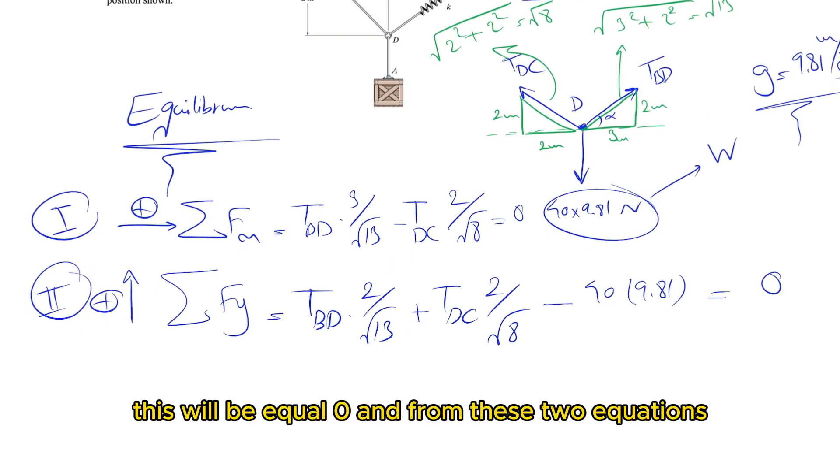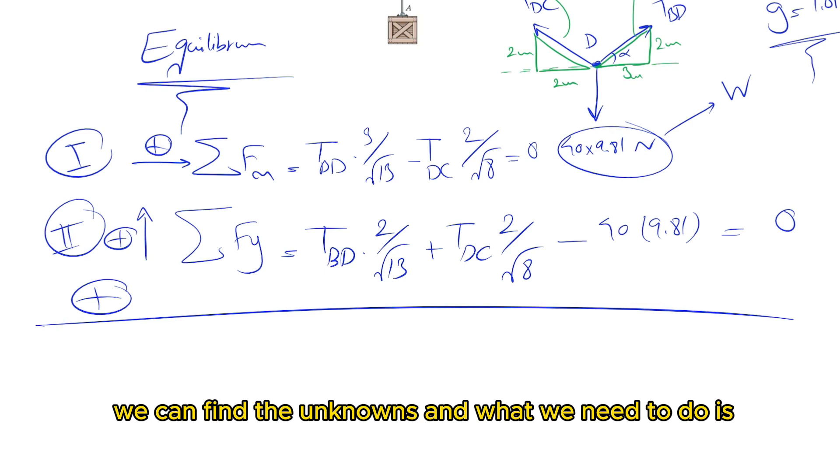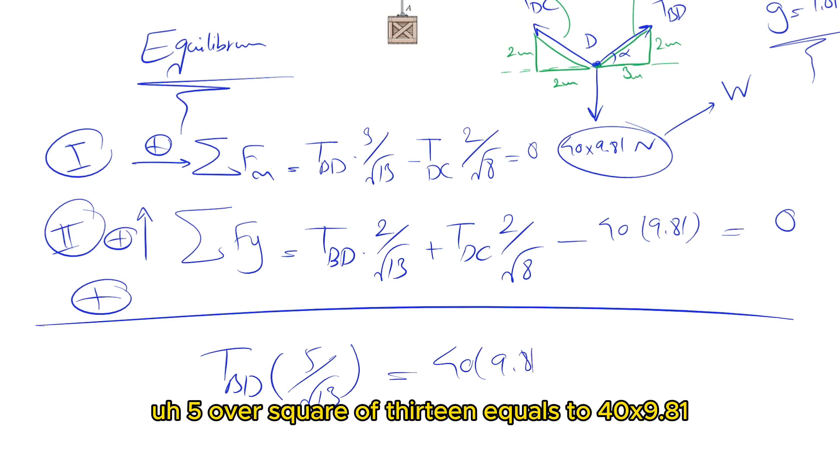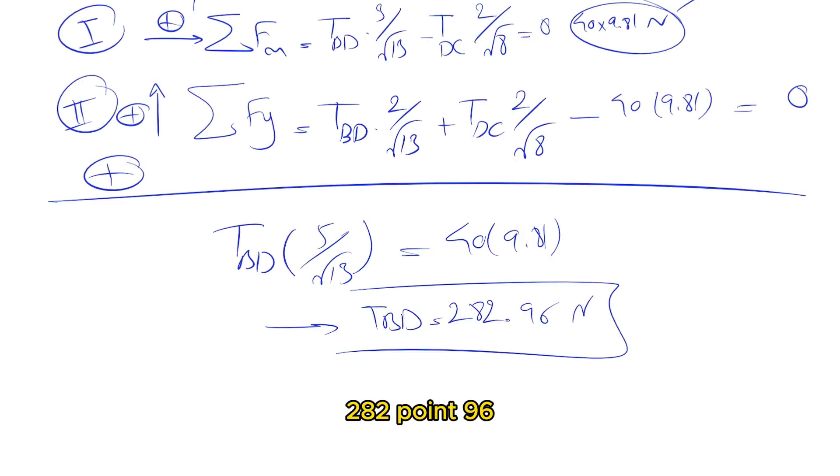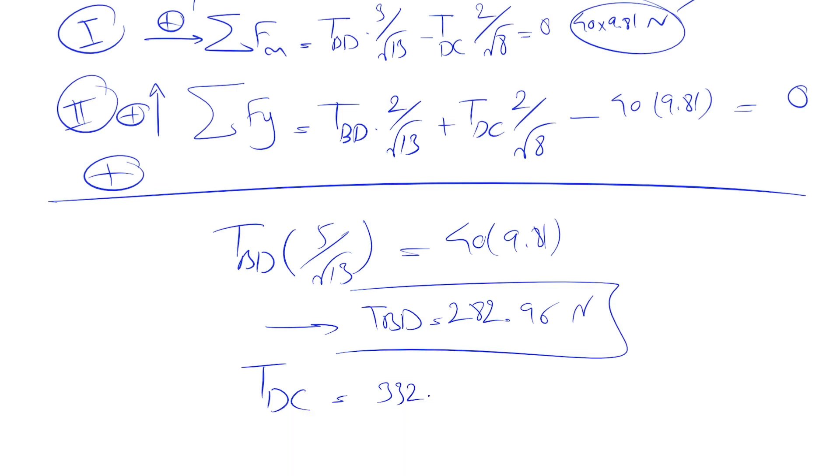This equals zero. From these two equations we can find the unknowns. If we add these two together, we have T_BD times 5 over square root of 13 equals 40 times 9.8. From here we find T_BD equals 282.96 newtons, and T_DC equals 332.96 newtons.